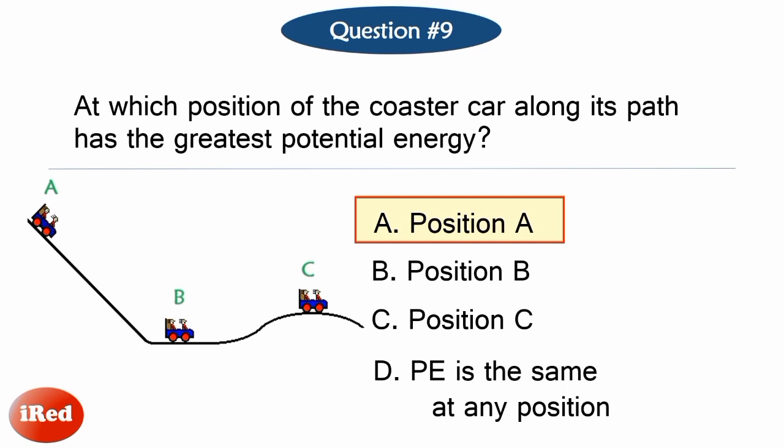The correct answer is Letter A. The car has the greatest potential energy at position A. It is at the highest distance above the ground at A, and thus has the greatest potential energy at this position.